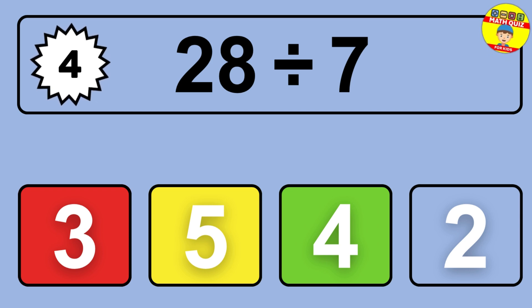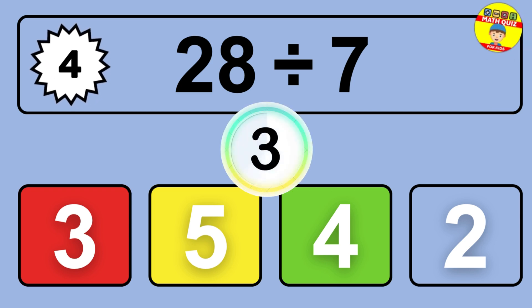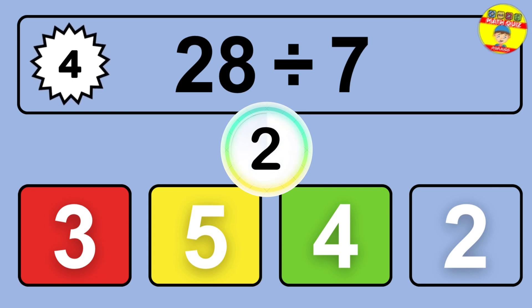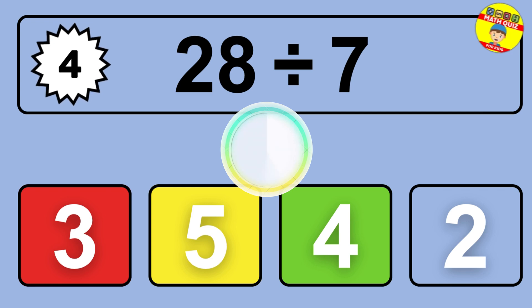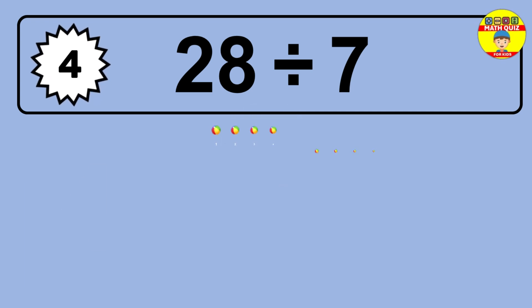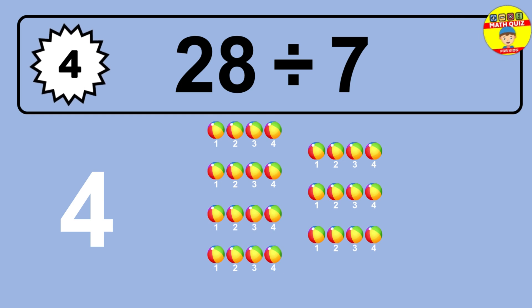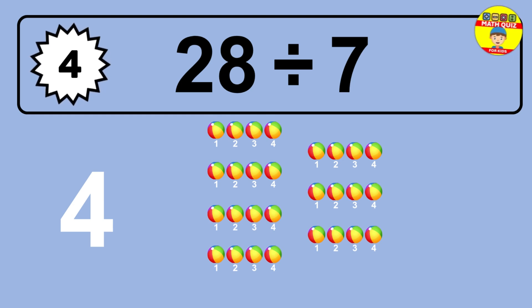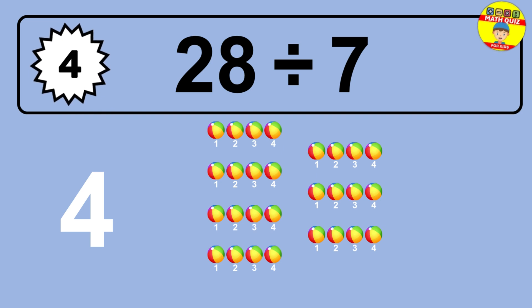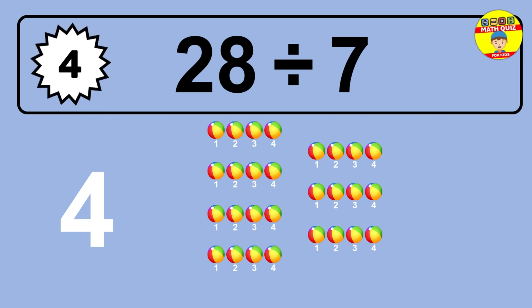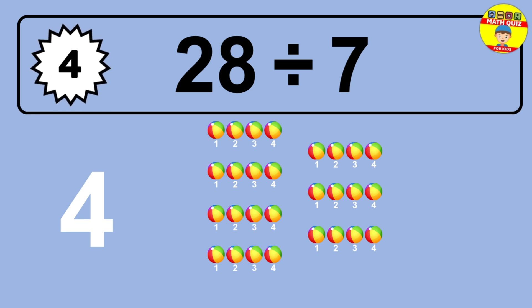28 divided by 7 is... time to think. Let's go to the solution. Divide the number 28 by 7. Each group contains 7 units, so dividing 28 by 7 results in 4 equal groups. Thus, the result is 28 divided by 7 equals 4.